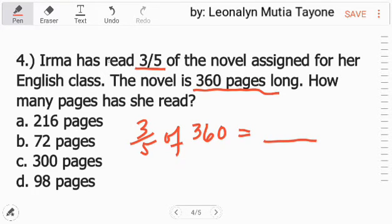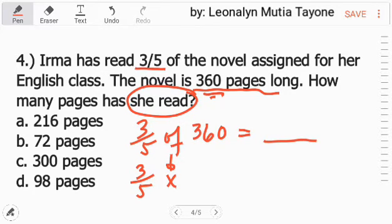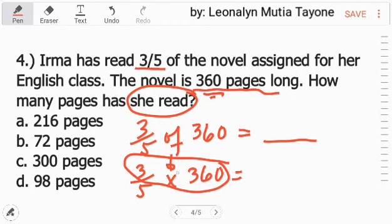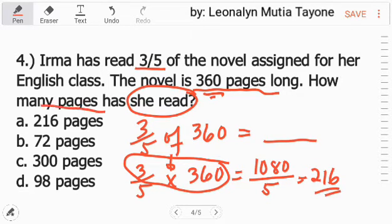Ulitin ko ha. The given is, Irma has read 3/5 of the novel assigned for her. The novel has 360 pages. So, 3/5 of 360 pages, yun lang yung nabasa niya. So, ito na yun. 3 over 5. Of is equivalent to multiplication. Tapos, 360. Mayroon pwede na tayong mag-solve. Ito ang i-multiply natin. 360 times 3. And that is 1,080 over 5. So, 1,080 divided by 5. And that is 216. So, the answer is letter A.